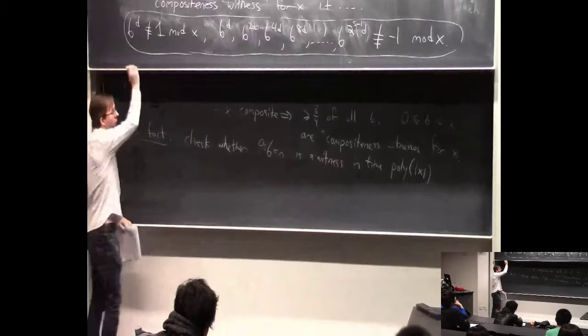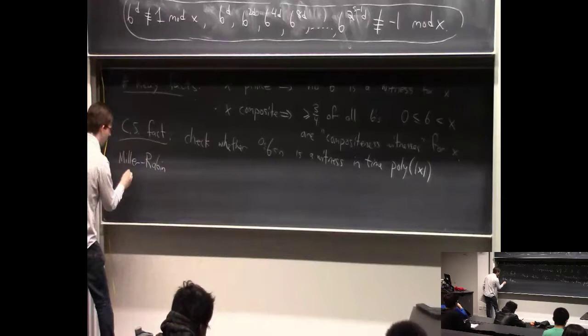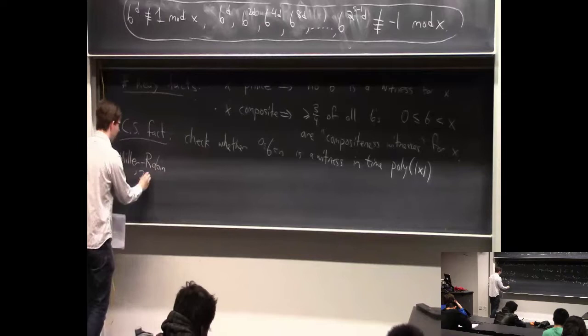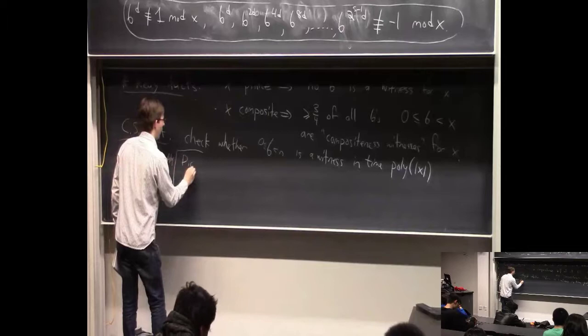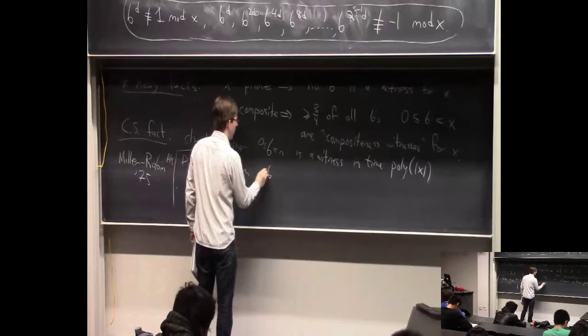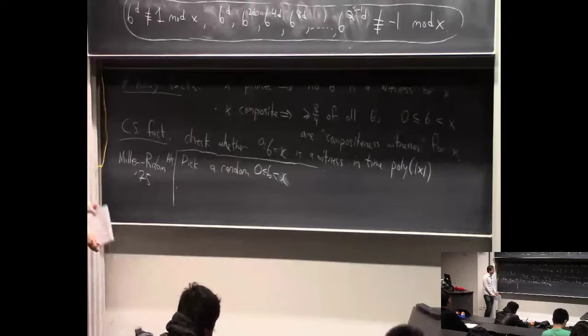Once all these facts are in place, you have a super simple algorithm for attempting to check compositeness — done by Miller and Rabin in the 1970s. The algorithm is: pick a random number b between 0 and x, then check whether b is a compositeness witness for x.